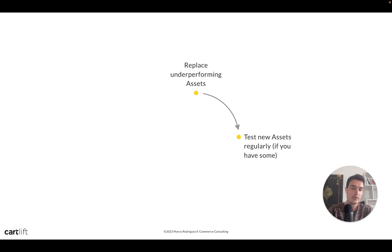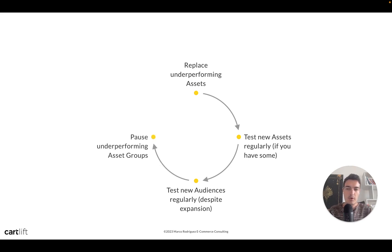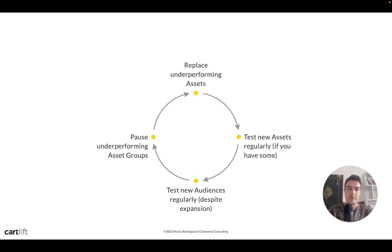You can test new assets in the same asset group, or if that asset group performs very well, create a new one for testing. Also test new audiences regularly — even though Google uses audience expansion, you saw how much the audience can change performance. Especially for mass-appeal products, testing is critical. And pause underperforming asset groups — they drain your budget since Google spends across all asset groups regardless of performance.